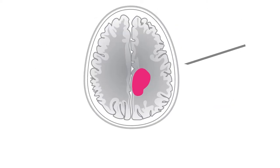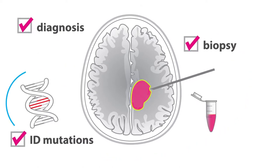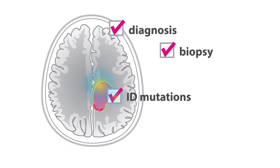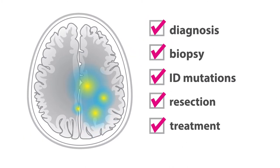But what if surgeons could diagnose the tumor, including the specific mutations driving tumor growth, right in the operating room, and then treat the area of the tumor with targeted therapies to reduce the chance of recurrence?